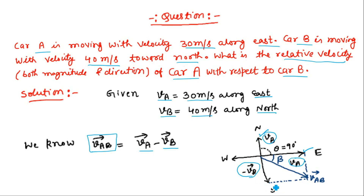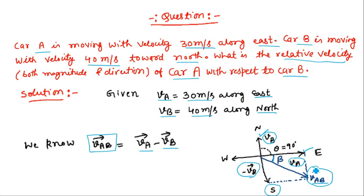Obviously the reversed VB will be in the south direction. Let us complete this parallelogram — one side is VA vector and the other side is minus VB vector. The diagonal vector represented by this blue arrow will represent the velocity VAB. Let this diagonal vector make an angle beta with the velocity VA. Therefore we have to find the magnitude and the direction of vector VAB.